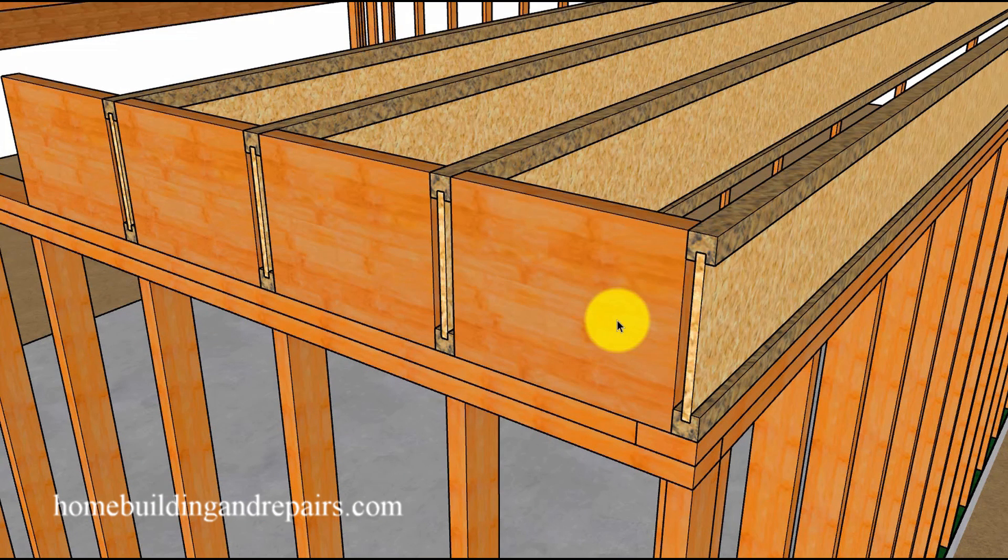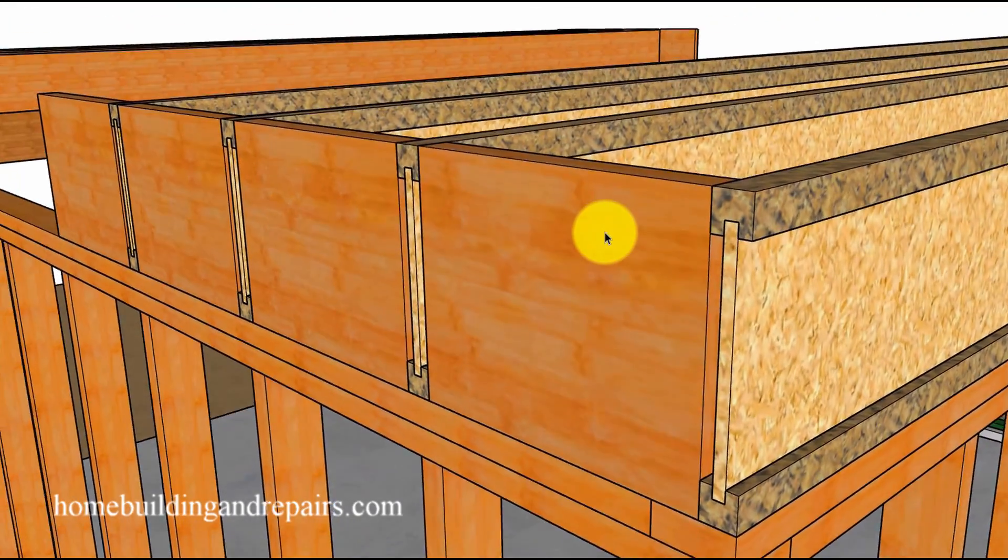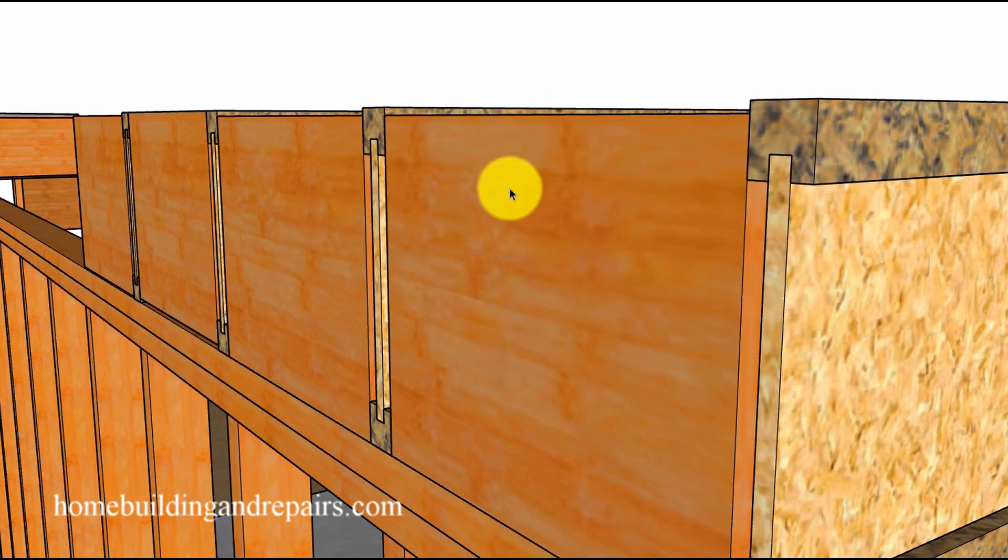Now for those of you thinking to reverse the situation and use truss joists for the floor joists and conventional lumber for the blocks, you're going to end up with the opposite effect as the blocks shrink and the joists don't.